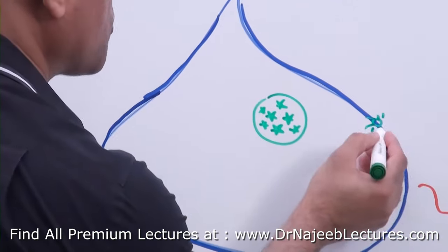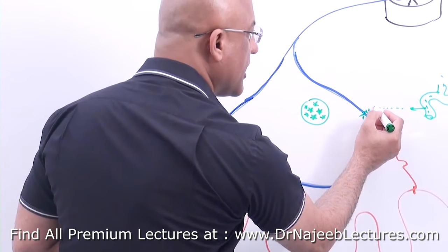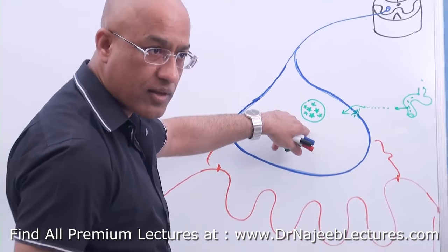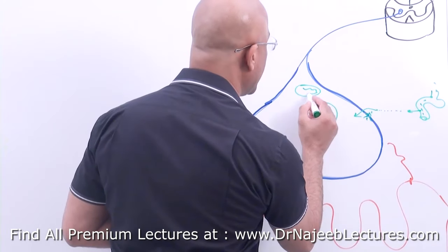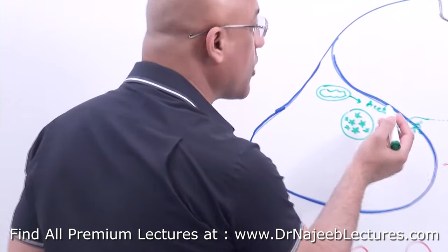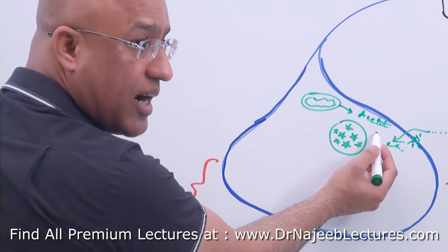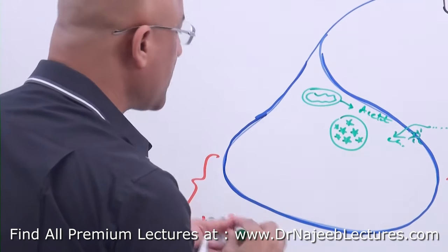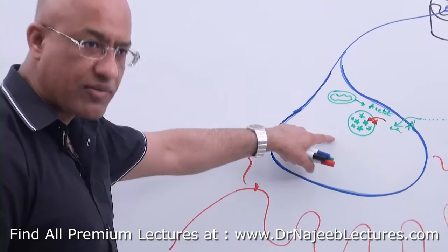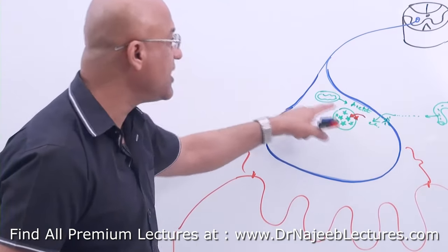Choline is absorbed from the GI tract through your diet into the circulation, then goes to extracellular fluid, and choline uptake transporters concentrate it into the motor nerve endings. The mitochondria in the nerve ending provide acetate. An enzyme helps the choline fuse with acetate to make the neurotransmitter acetylcholine, and then special transporters concentrate the acetylcholine into vesicles.